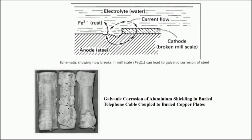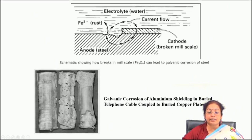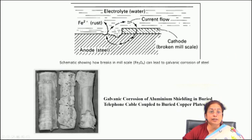Here are a few examples of galvanic corrosion. This schematic shows that a break in the mill scale exposes fresh surface — where the scale is still intact, a galvanic cell forms, and the rate of attack is higher at the broken/exposed surface than at the unbroken part where scale remains. Similarly, this is the case of galvanic corrosion of aluminum sheathing in a buried telephone cable coupled to buried copper plates — the aluminum is destroyed to a large extent due to galvanic attack because copper is highly stable compared to aluminum.